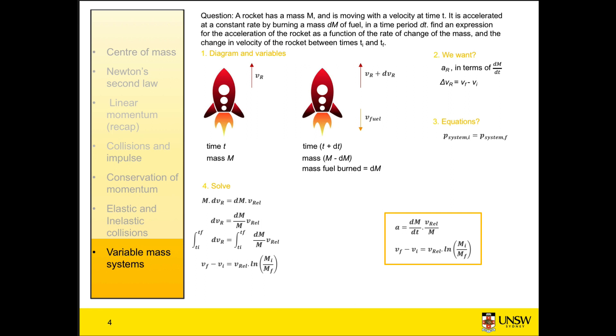These two equations we've derived for the acceleration and the change in velocity of the rocket are your general equations to solve any problem to do with variable mass systems.